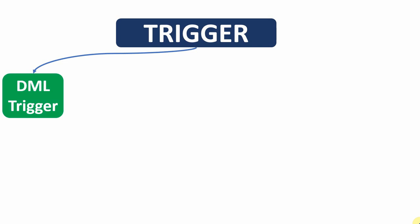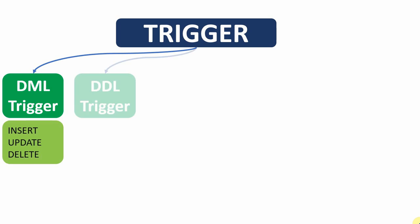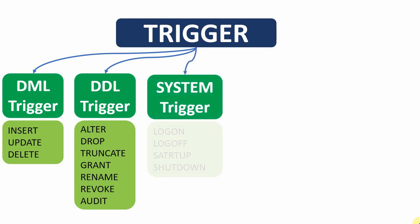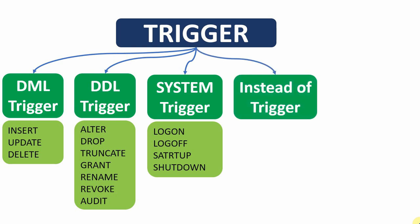We'll understand some information about DML triggers so that our understanding with respect to compound trigger will be better. Triggers are majorly classified into DML triggers, which fire whenever any DML operation is performed, DDL triggers, which fire whenever any DDL operation is executed, and system triggers, which execute whenever a system event like logon, logoff, startup, or shutdown happens. We also have the instead-of trigger, which is written on top of views to redirect incoming DML operations into the underlying base table.